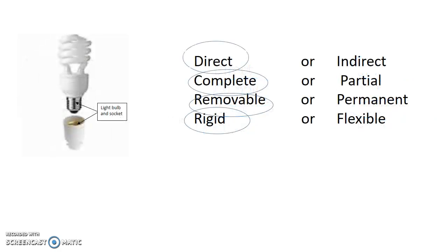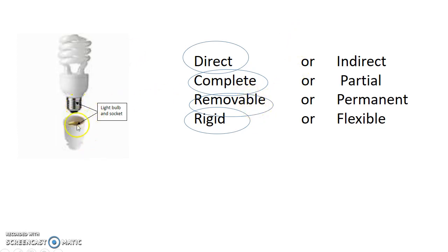Now the light bulb and socket: the link is direct — there's no screw, glue, or third party. It is complete — once placed inside, no movement is possible. It is removable — you can take it apart and put it back without damage. And it is rigid — once placed, there is no movement possible.